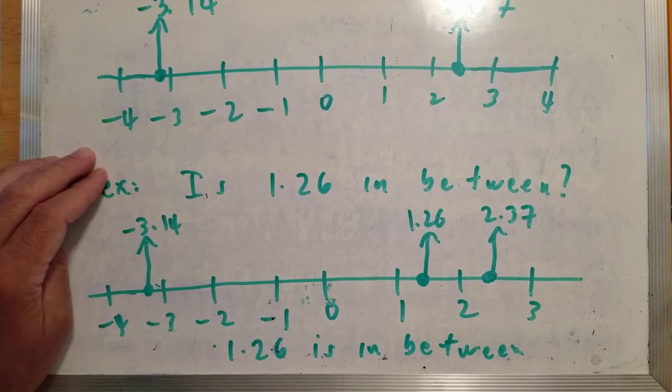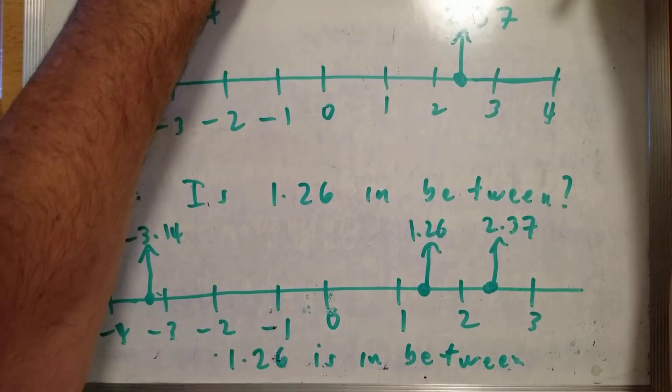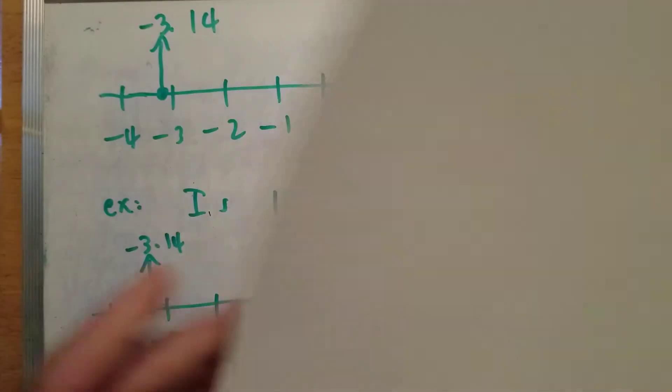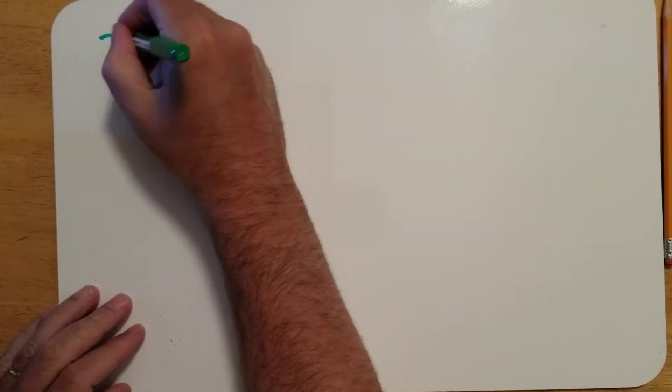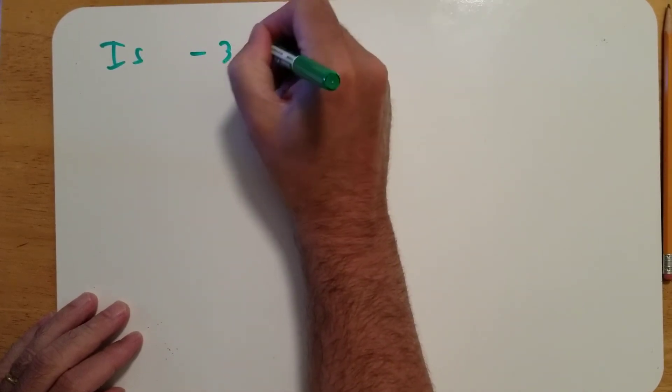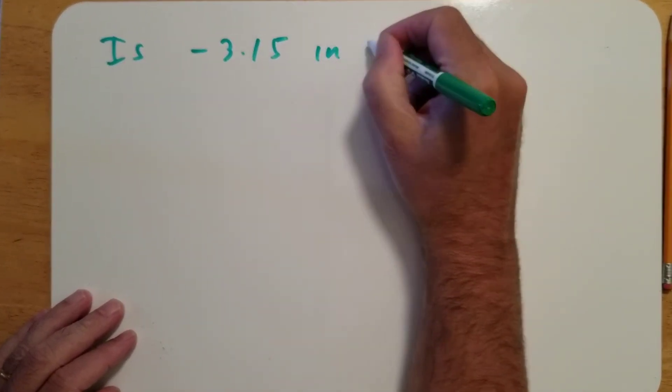Okay. So, of course, I'm now going to have to do an example of a number that's not in between. So, here's another example: is negative 3.15 in between?